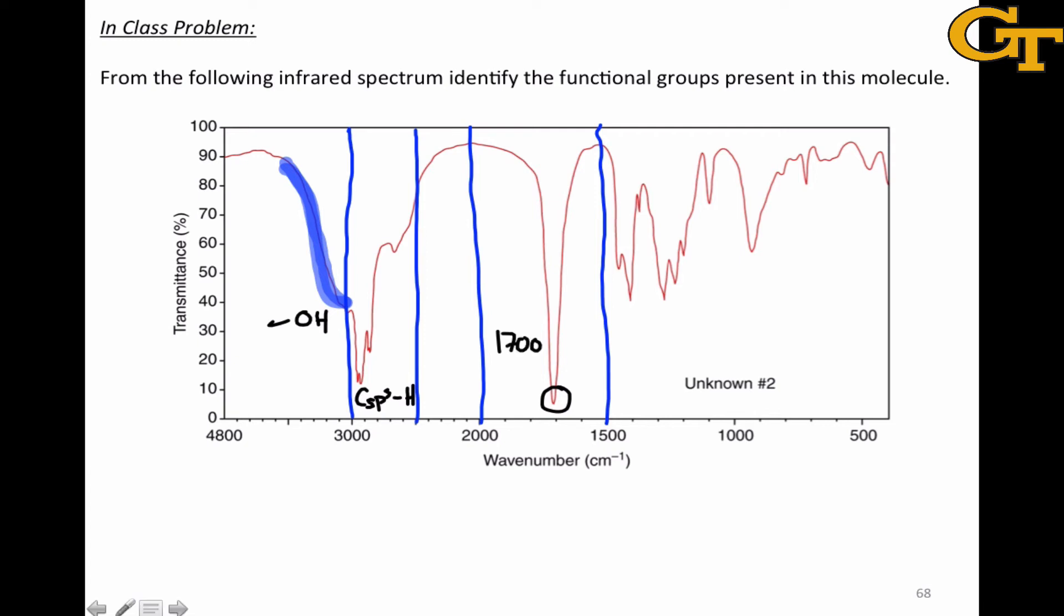In cases where you see both a carbonyl group, particularly one in the 1700 to maybe 1780 range, and a hydroxyl group, it's a good bet that the structure you're looking at contains the carboxylic acid functionality.